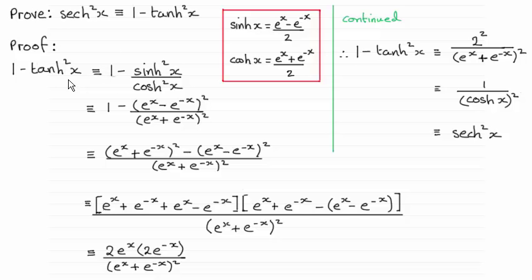Starting with the right-hand side then, tanh²x is the same as sinh²x over cosh²x. I pick up on these two results here, and you'll notice that when you square them and divide them, the twos will cancel out.